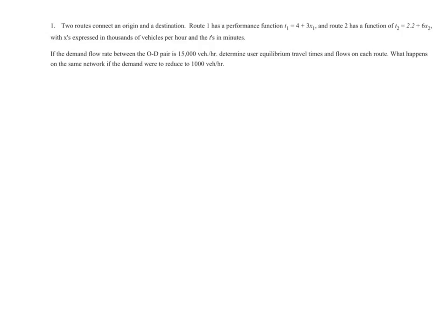So this is a simple problem of traffic assignment. We have two routes given between an origin and destination, and both of the routes' link performance functions are known. And based on that, you're supposed to determine how much of the traffic flow, the total demand traffic flow between the origin-destination pair, will go to which route.